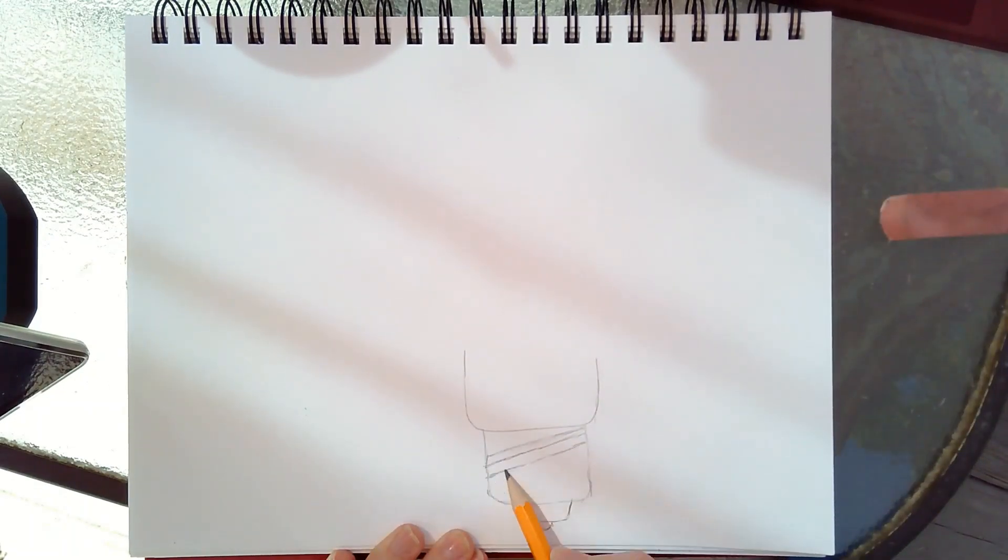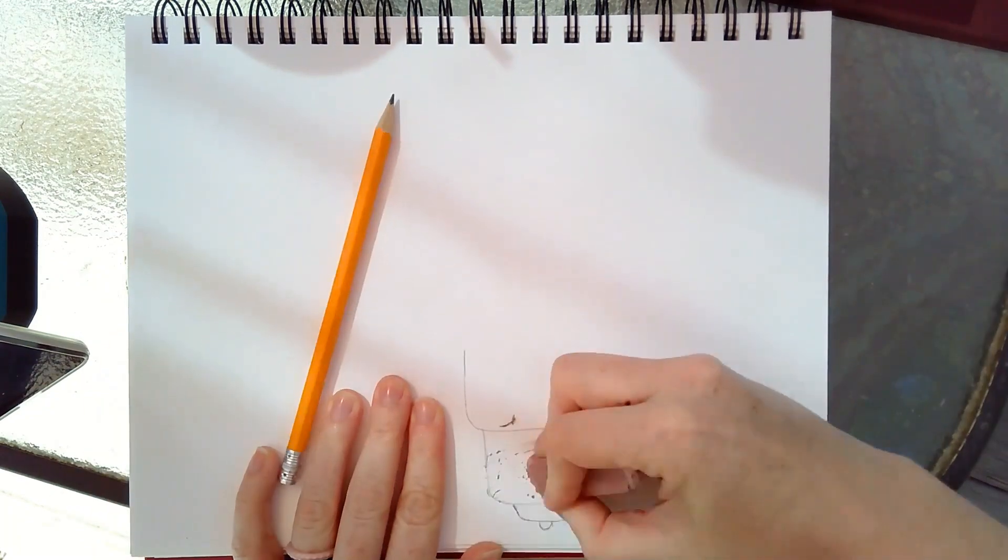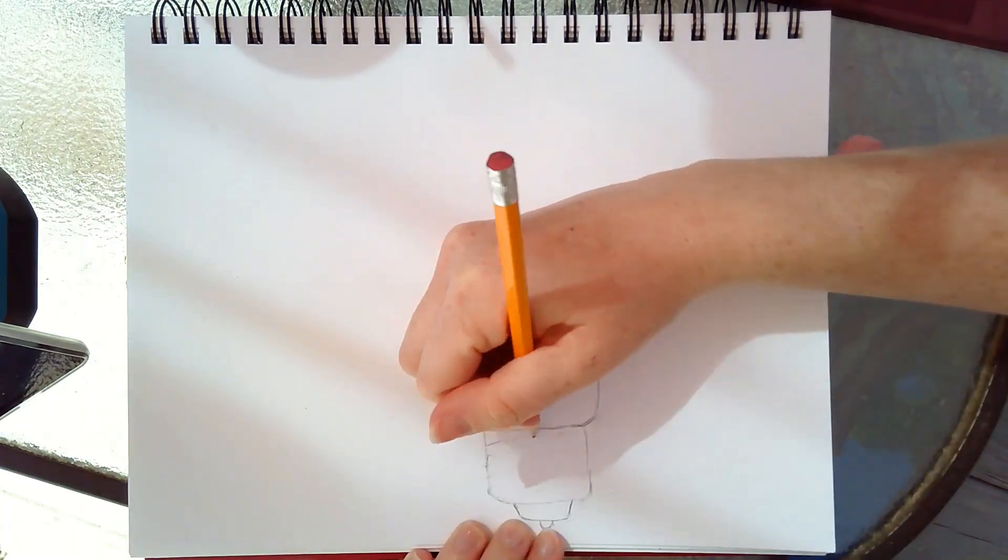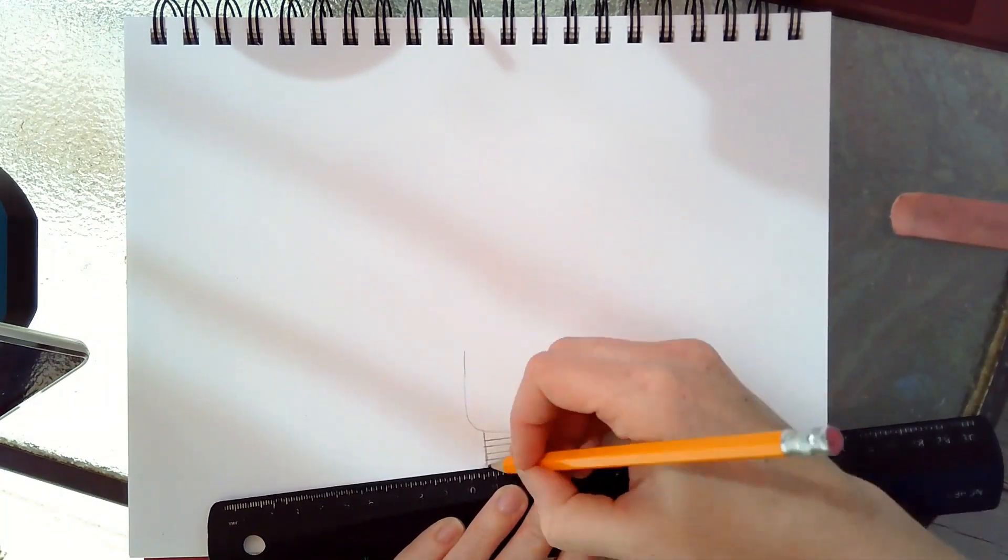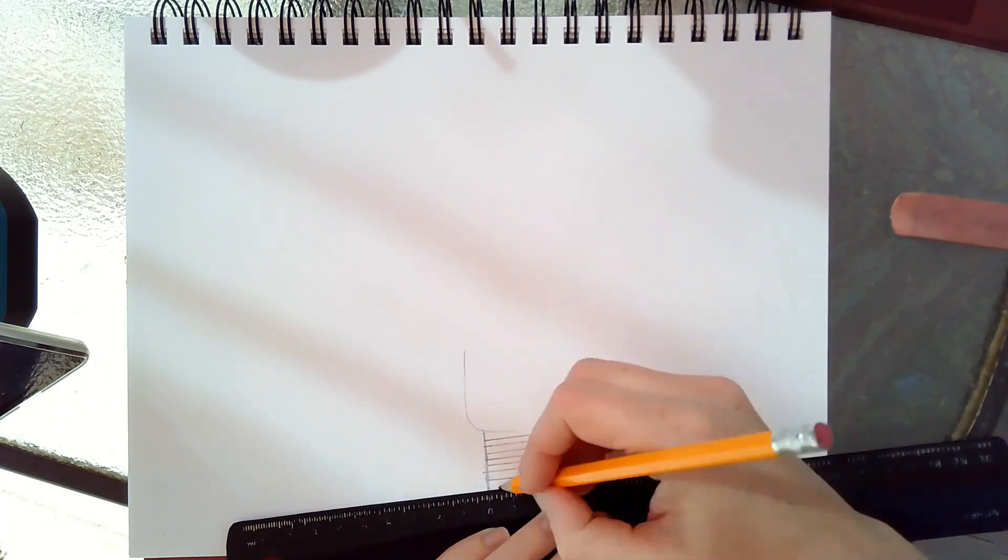I started off by sketching my light bulb with a pencil, which was a good thing considering how many times I messed up and needed to erase. Finally, I grabbed my ruler, which is really where I should have started, and I highly recommend if you have a ruler with you to go ahead and start with the beginning.